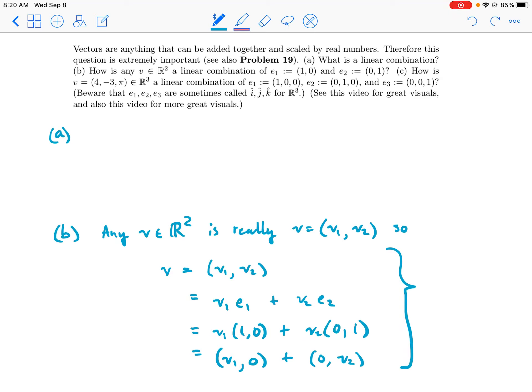So any v at all is equal to a linear combination of e1 and e2. In a specific case, like if v was the vector (4, 3), then v is equal to 4e1 plus 3e2.